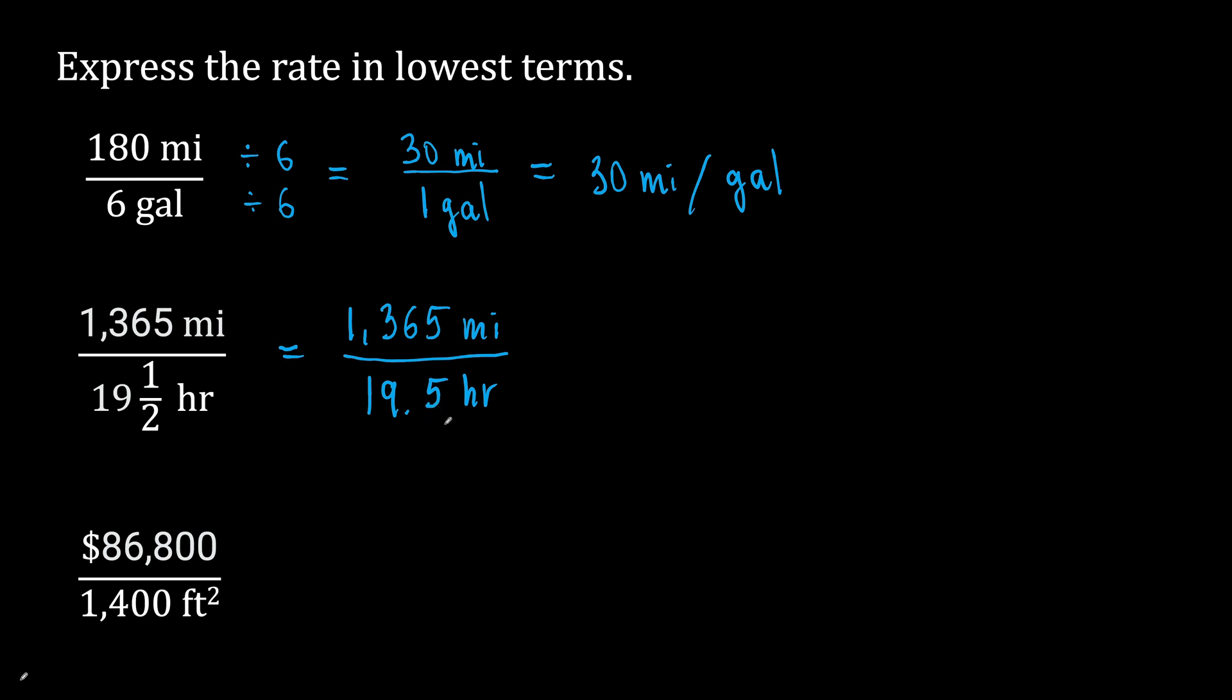I'm going to use a calculator to divide the numerator and denominator by 19.5 and see what happens. So divide 1,365 by 19.5 and also the denominator by 19.5. 1,365 divided by 19.5 gives us 70 miles over 1 hour.